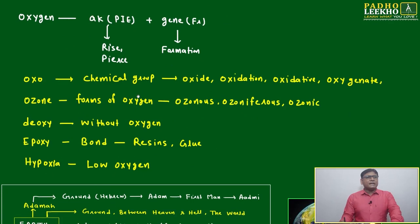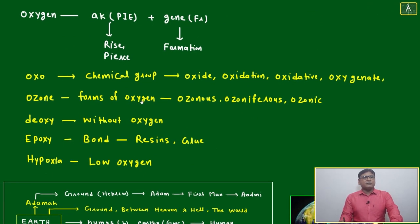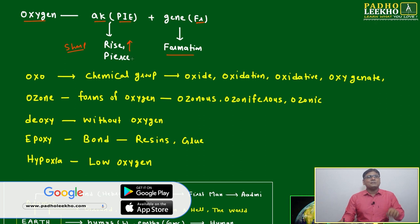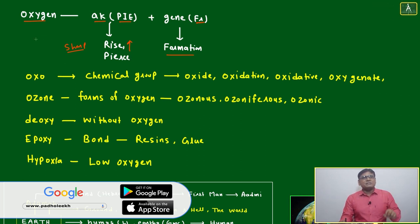Next, one of the important gases which is very much required for our life is called oxygen. Oxygen is coming from two roots. One is 'ac' - that is a proto-Indo-European root that means rise or pierce, meaning very sharp, which will be piercing. Then it is French formation. If it is a sharp or rise or pierce formation, it can be pierce.